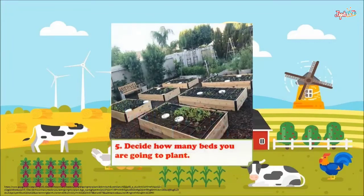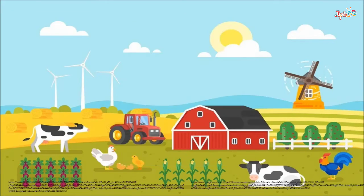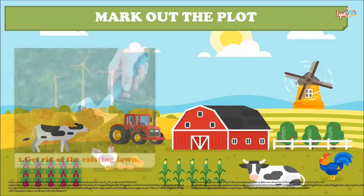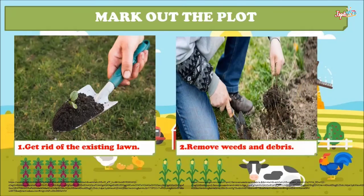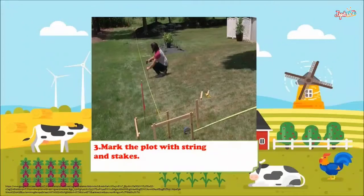Decide how many beds you are going to plant and mark out the plot. Get rid of the existing lawn, remove weeds and debris, then mark the plot with string and stakes.